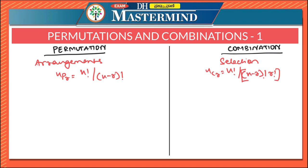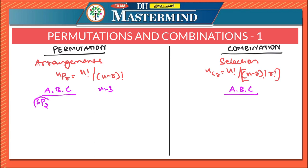Let us understand this with an example. Let us say there are three letters A, B, C. Here n becomes 3. If we have to arrange two at a time, then it is 3P2 — that is arranging three letters taken two at a time. Whereas combination becomes selecting two letters out of three letters, so here we do 3C2.